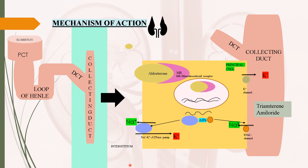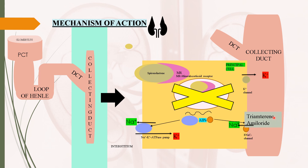When potassium-sparing diuretics like spironolactone are administered, they bind with mineralocorticoid receptors present on the principal cell and block this whole mechanism. When drugs like triamterene and amiloride are administered, they block the epithelial sodium channels present on the luminal membrane of principal cells and reduce reabsorption of sodium and excretion of potassium ions. Finally, potassium-sparing diuretics potentiate excretion of sodium ions in urine and prevent potassium ions from being excreted.